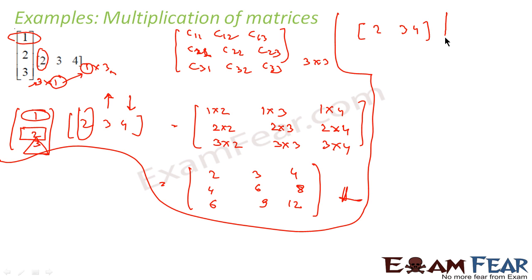So let's try to multiply 2, 3, 4 with 1, 2, 3. For this, the order is one horizontal, three vertical: 1 into 3. One, two, three horizontal, one vertical: 3 into 1. Is multiplication possible? Yes, because 3 and 3 are matching. What is the final order? 1 cross 1, because this is 1, this is 1, so it will have only one element.